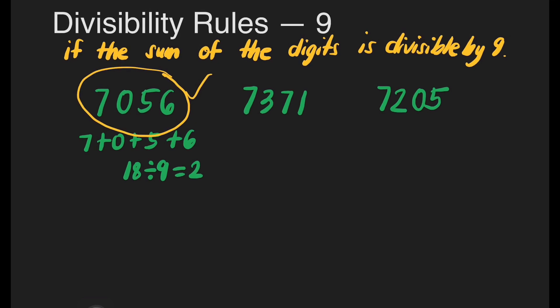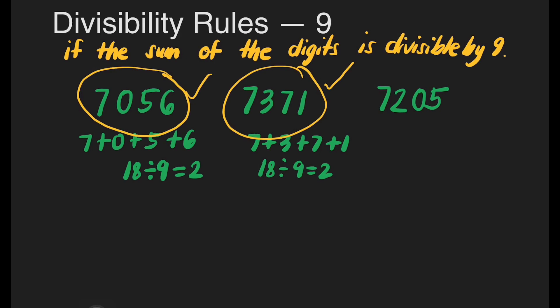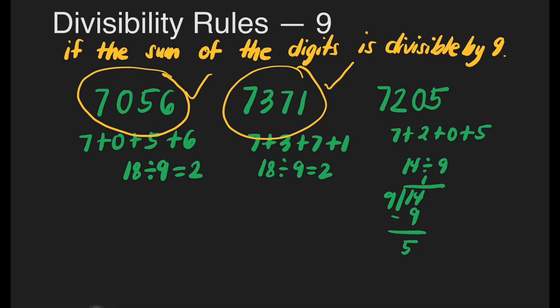Let us now check the second number, 7,371. That's 7 plus 3 plus 7 plus 1: 7 plus 3 is 10, plus 7 is 17, plus 1 is 18. So this number is also divisible by 9 because 18 is divisible by 9. Next, let's check 7,205: 7 plus 2 plus 0 plus 5 — 7 plus 2 is 9, plus 0 is 9, plus 5 is 14. 14 divided by 9 has a remainder of 5, so 7,205 is not divisible by 9.